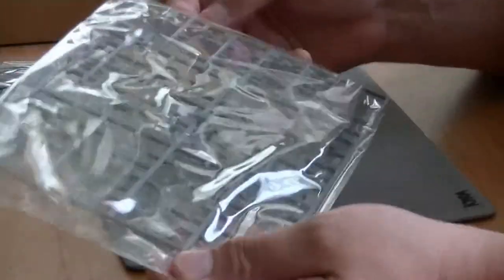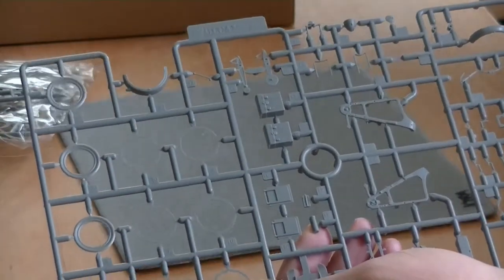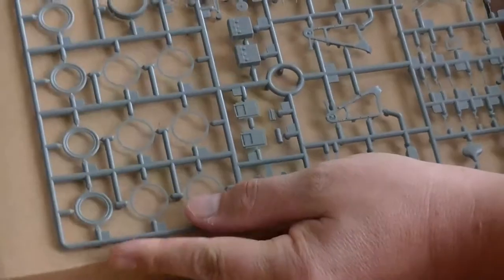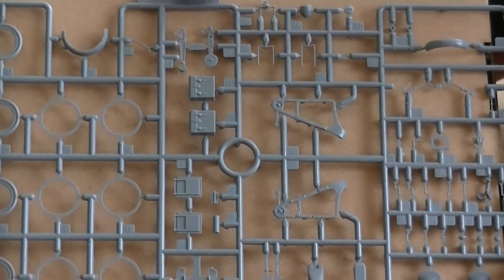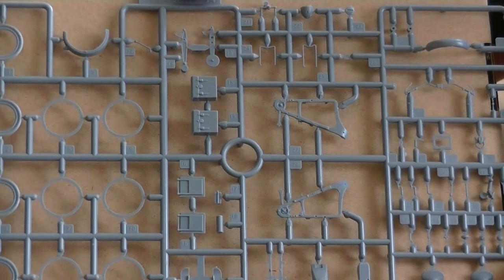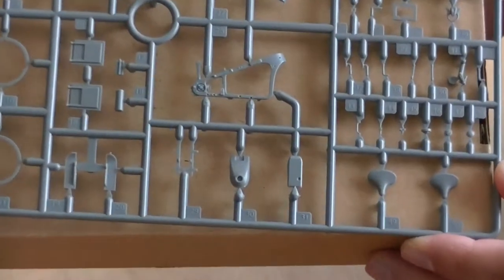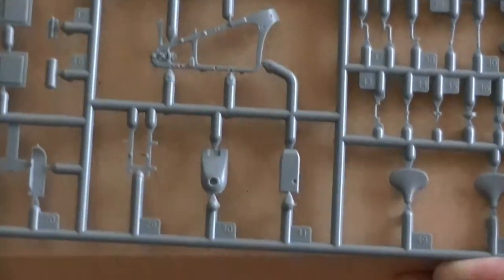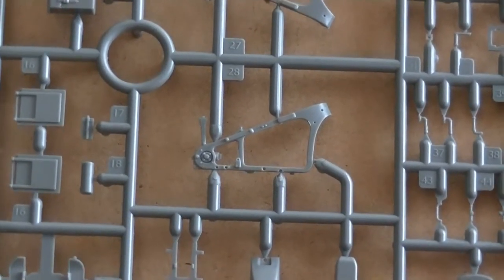So, let's start with the main sprue here, which contains mostly the frame and the wheels, that means the rims. Very nice, crisp, clean. You can see the frame here. No flash. Perfect.